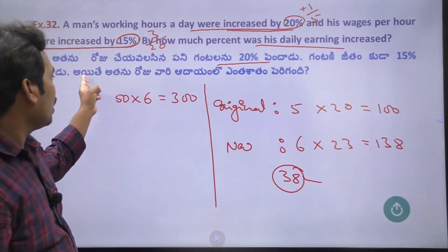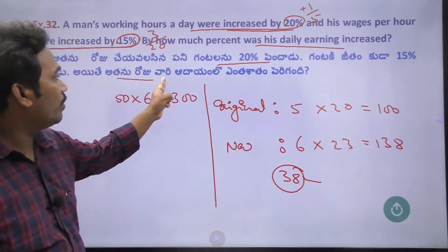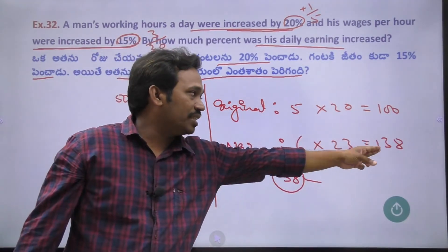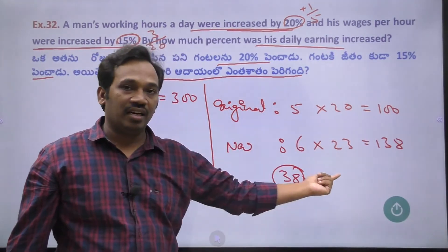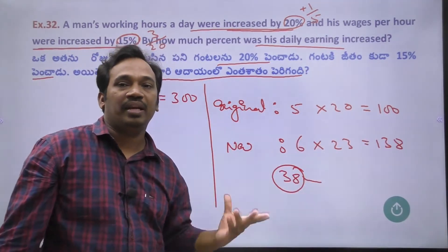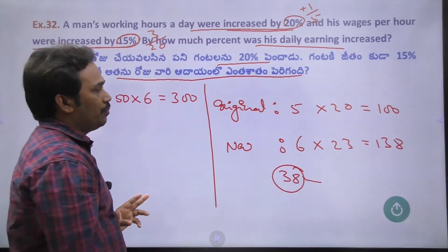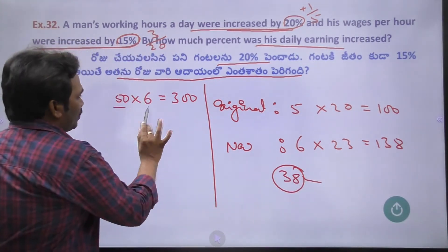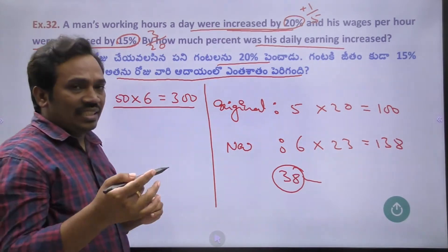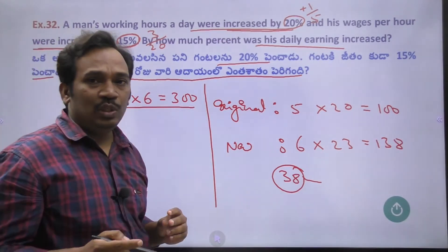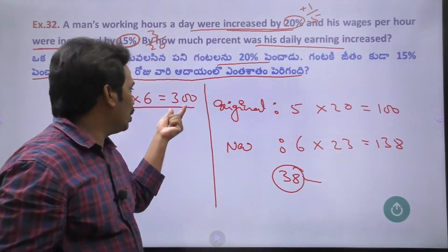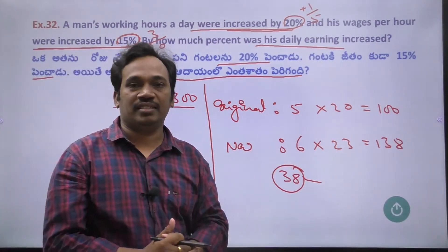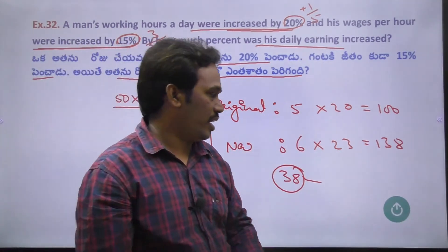So if originally you got 100 rupees, now you get 138 rupees. The 100 cancels out, and the remaining increase is 38 rupees. That is a 38% increase. The key is: money per hour × number of hours = total money. Okay? Great. Next one.